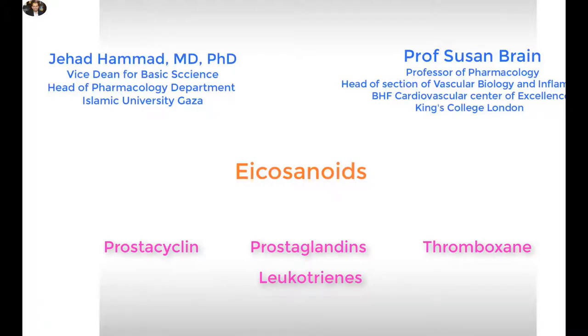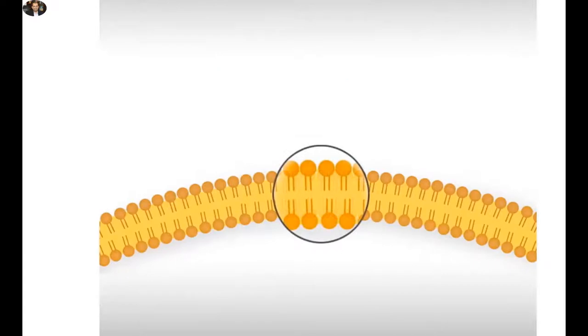Let's now have a brief summary of eicosanoid production. Eicosanoid production starts from the phospholipid bilayer of the cell membrane,